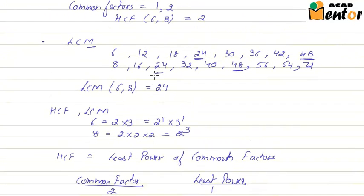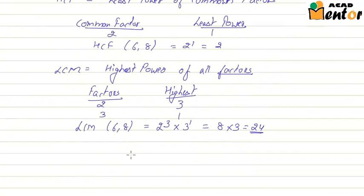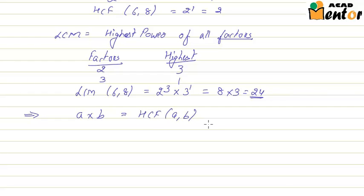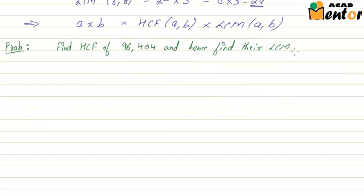You can observe that 24 is the same as what we calculated using the simple listing approach. Regarding LCM and HCF, there is an important property: for any two given numbers a and b, the multiplication of a and b equals the HCF of a and b multiplied by the LCM of a and b.